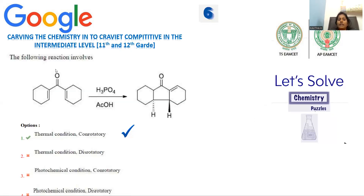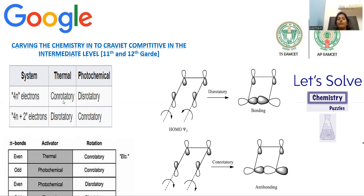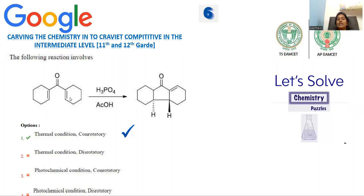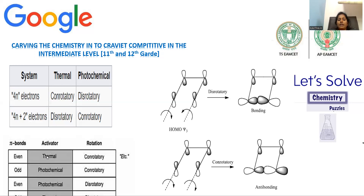In this compound, the carbonyl double bond is not participating because it is a 4N electron system — it is a 4N π-electron system — so thermal con-rotation is preferable. Under thermal conditions, if an even number of π bonds are present, con-rotation is preferable. There are two π bonds participating: 2+2, which is even — so thermal condition and con-rotatory apply. To illustrate: if this bond moves clockwise and this bond also moves clockwise, that is con-rotatory. If one moves clockwise and another moves anti-clockwise, that is dis-rotatory.